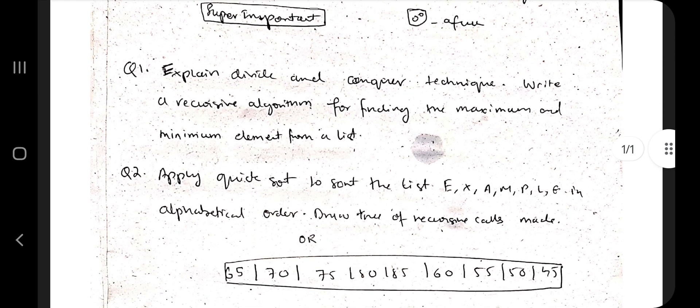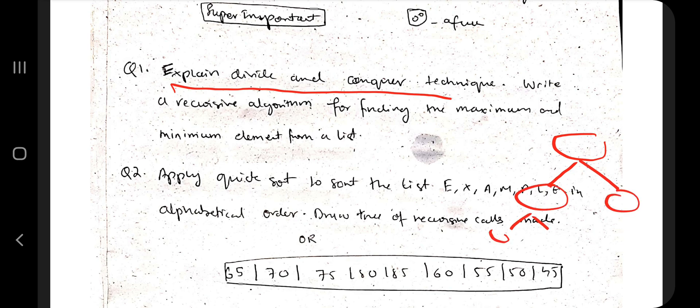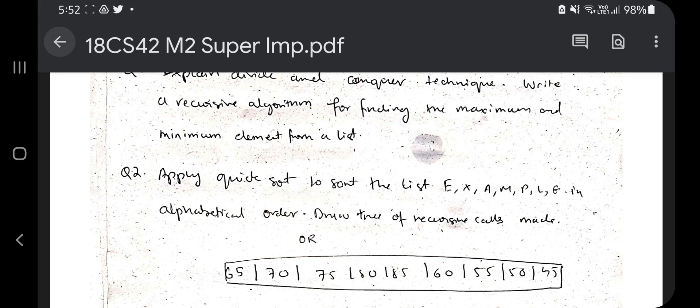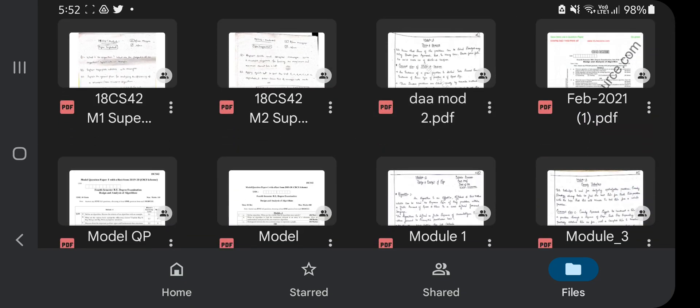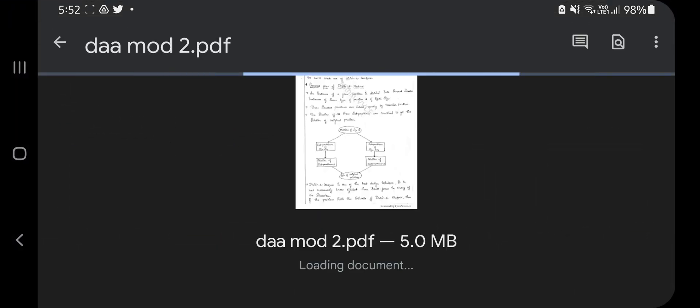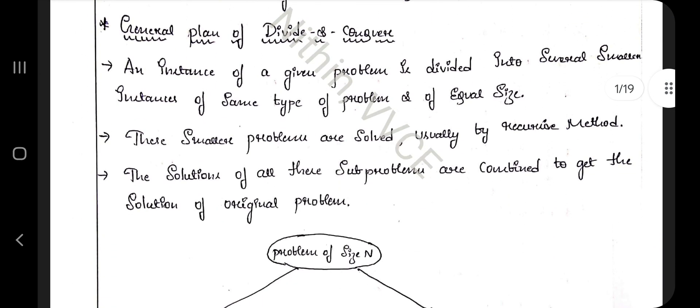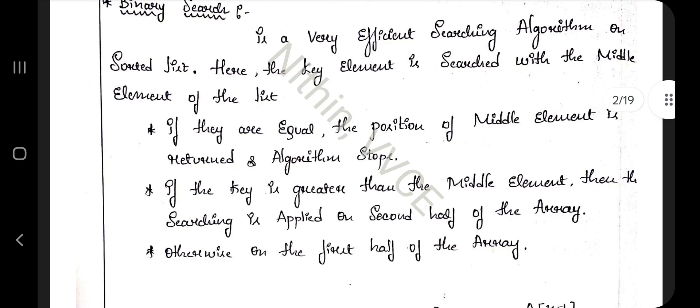The first question is: explain divide and conquer technique, write a recursive algorithm for finding the maximum and minimum element from a list. If I give you the basic overview, divide and conquer means the data will be divided into two halves and again divided into corresponding halves. Each will be solved independently.